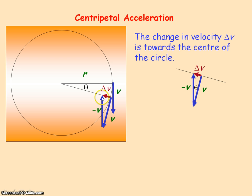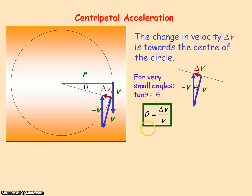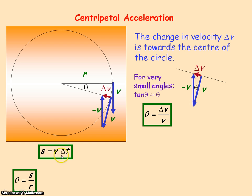Since the change in velocity is towards the centre of the circle, and acceleration equals the rate of change in velocity, our acceleration is towards the centre of the circle. For small angles, theta in radians, tan theta is approximately equal to theta. So tan theta equals the opposite, which is delta v, divided by the adjacent, which is v. Therefore theta equals delta v divided by v. We also know that theta equals the arc length s, the distance travelled, divided by r, the radius of the circle.